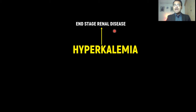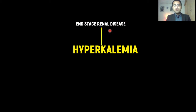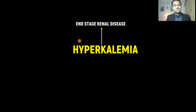Excess potassium — hyperkalemia — can occur due to end-stage renal disease. Since kidneys maintain the normal level of potassium in the blood, whenever there is a problem with the kidneys in end-stage renal disease, potassium levels in the blood go up.